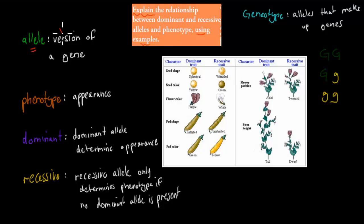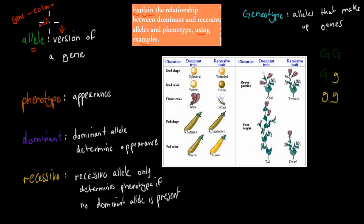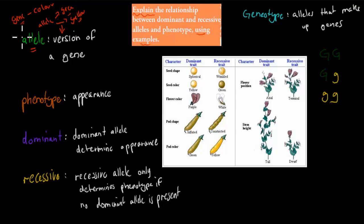An allele is a version of a gene. For example, if we have our gene which determines the colour of the pea, then our alleles would be green and yellow — that's what colour they actually make up. Whereas the gene is quite general, just saying this gene codes for colour, the alleles say it actually codes for this specific colour: green or yellow.